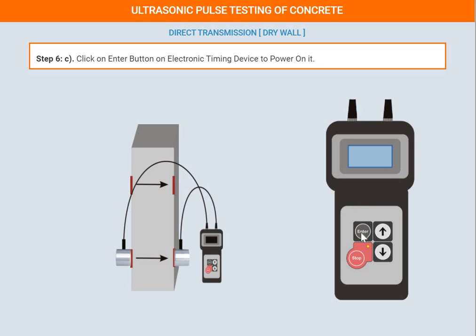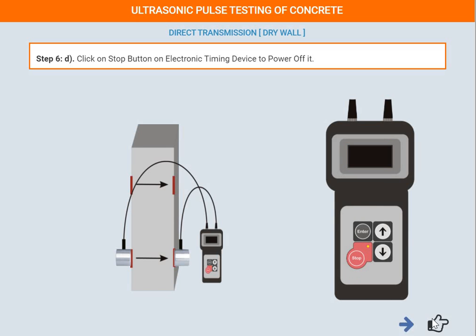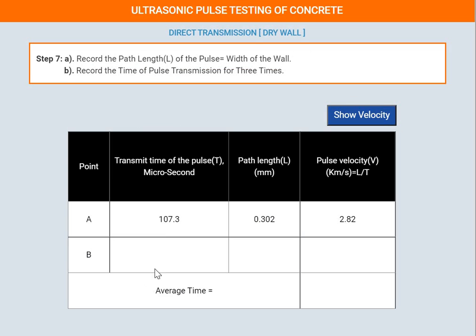Enter the value for point B and it will be displayed. Drop the button and click the arrow button again. The velocity table is shown for point A and point B. Finally, the average velocity is 2.80 km/s.